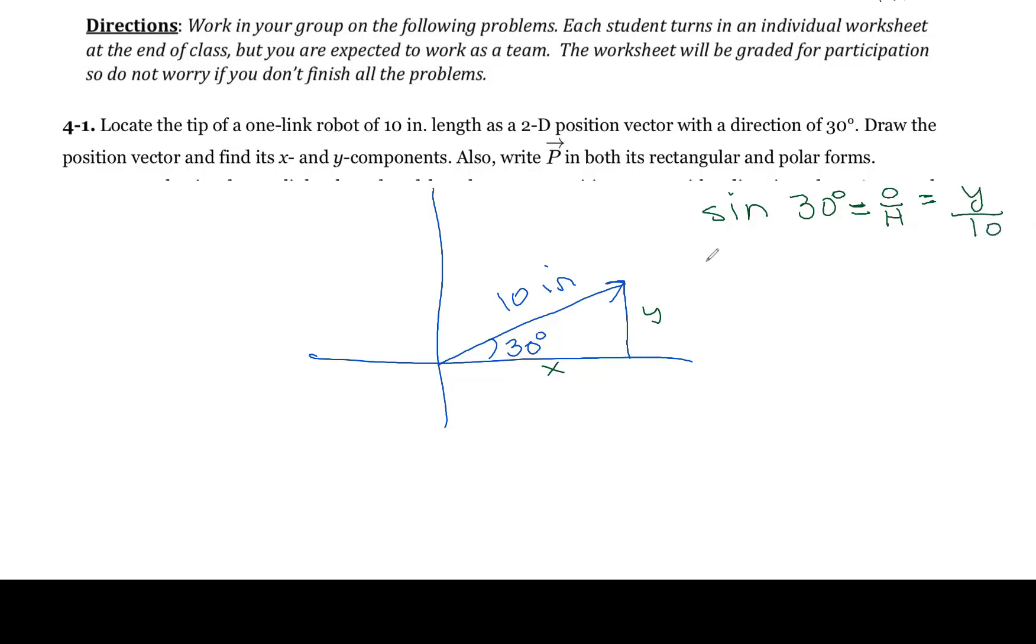And then I already know what the sine of 30 degrees is. I know the sine of 30 degrees is 1/2, and 1/2 is going to equal y over 10. And then I multiply both sides by 10 and get y equals 5.